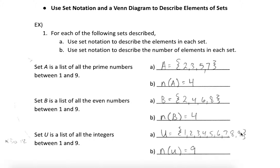We contain them by putting braces around them — just fancy parentheses. And then we say that it equals whatever the name is. So if we call this set U, then we would put a capital U. We would read this as set U is a set of the elements 1, 2, 3, 4, 5, 6, 7, 8, or 9. We can also come up with symbols to describe the number of elements in a set. We just use an N for number, put the set name in parentheses, and we read that as the number of elements in set U. So the number of elements in set U is 9 elements.